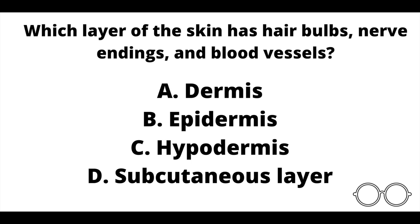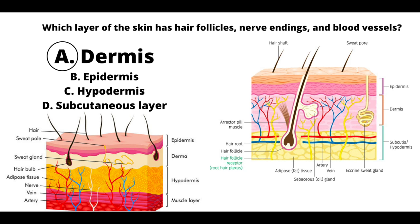Question number eleven. Which layer of the skin has hair bulbs, nerve endings, and blood vessels? A: the dermis. B: the epidermis. C: the hypodermis. Or D: the subcutaneous layer? Our answer here is A, the dermis. The dermis is the middle layer, lying between the epidermis and the hypodermis. The dermis carries hair bulbs, sweat glands, blood vessels, and lymphatic vessels.